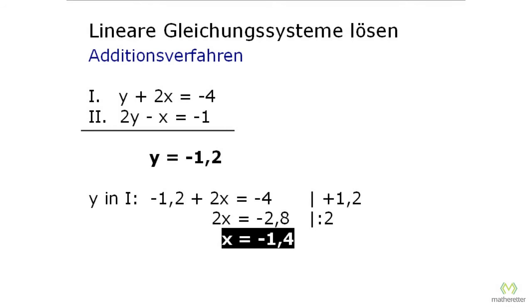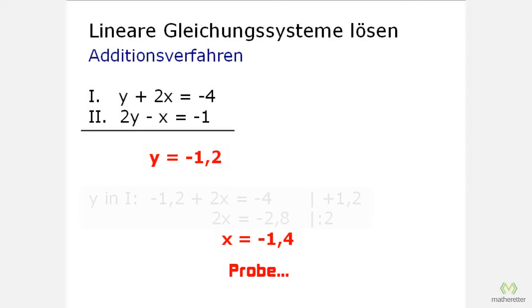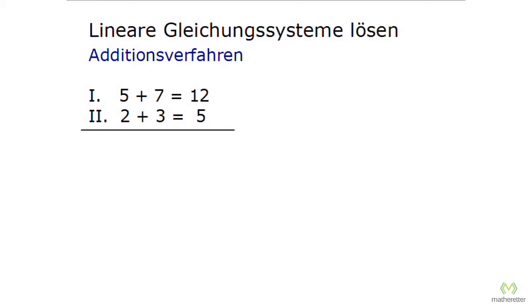And now we could, as before, set the values for x and y and insert them into the two equations. At the end, we want to show another insight. How you can imagine the elimination process with concrete values. Here we can take simple numbers such as 5 plus 7 equals 12 and in a second equation 2 plus 3 equals 5.